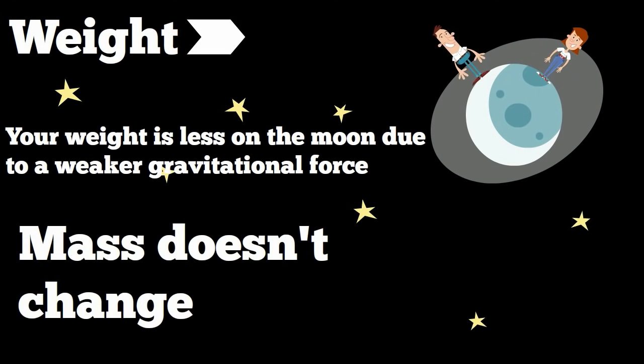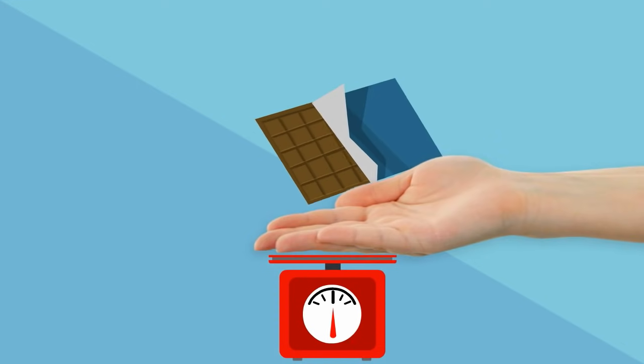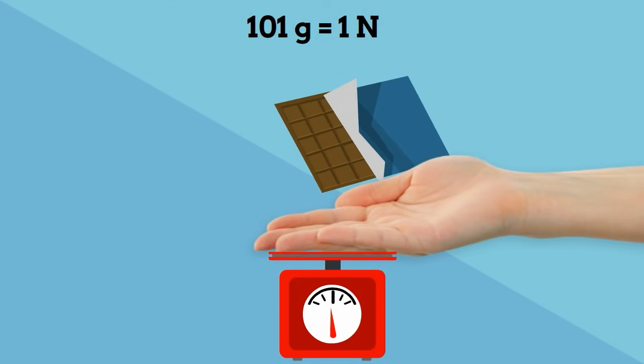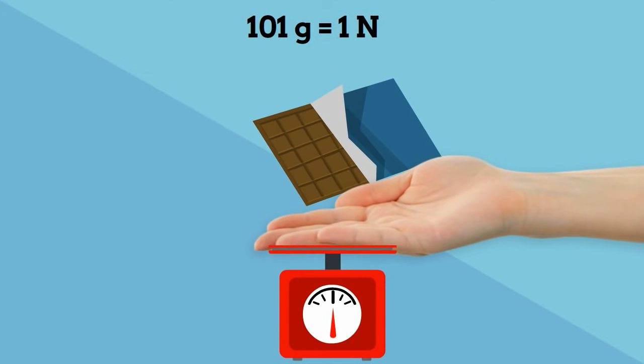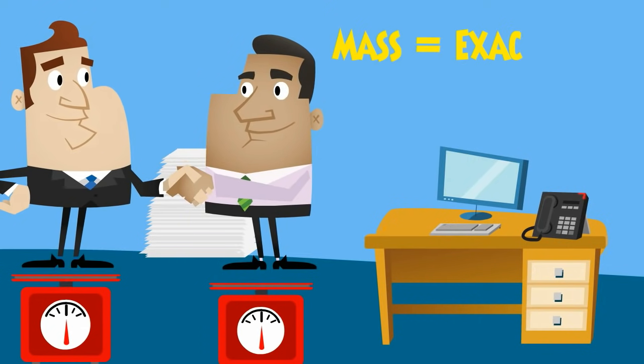The weight of a candy bar that has a mass of 101 grams exerts a force of 1 newton when held in your hand. When you step on a scale, it is an accurate measure of your mass but an estimate of the force of your weight.